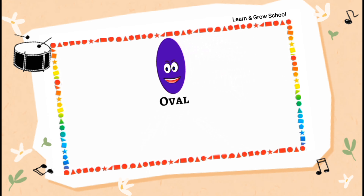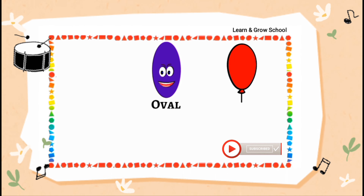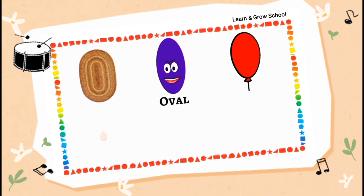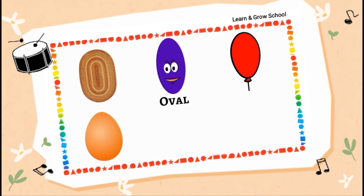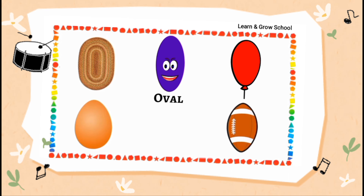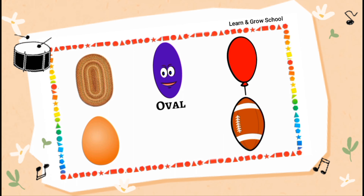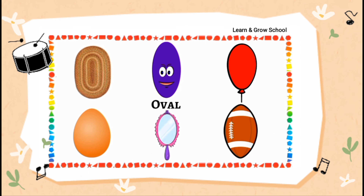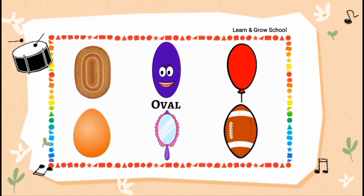For example, you can use me as a balloon. You can use me as a doormat. You can eat me as an egg. You can play with me as an American football. You can use me as a mirror. All these objects can be seen in the shape of an oval.